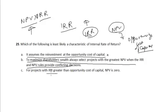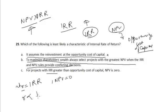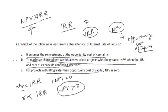Now for Option C: for projects with IRR greater than the opportunity cost of capital, NPV is 0. In fact, NPV equals 0 only when the rate of return equals the IRR. If the discount rate is less than the IRR, then NPV is greater than 0. So this statement is incorrect. Option B represents the correct statement, whereas Options A and C are incorrect.